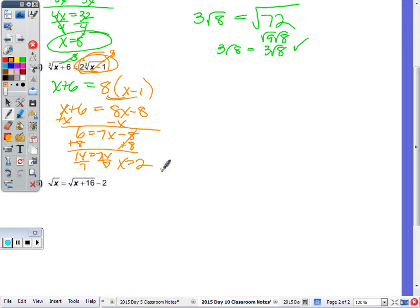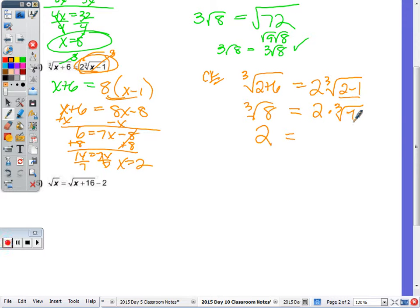So our check is the cube root of 2 plus 6 equal to 2 times the cube root of 2 minus 1. 2 plus 6 is 8. Cube root of 8 is 2. On this side, this is 2 times the cube root of 2 minus 1, which is 1. What's the cube root of 1? 1. And is 1 times 2 equal to 2? It checks.